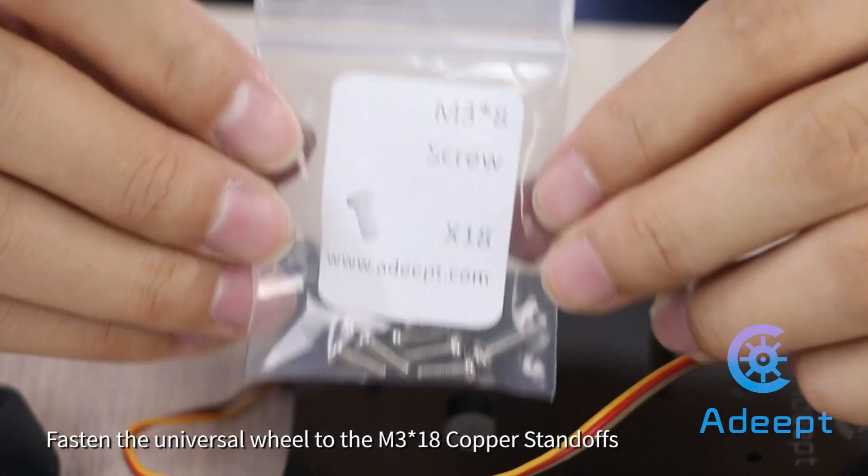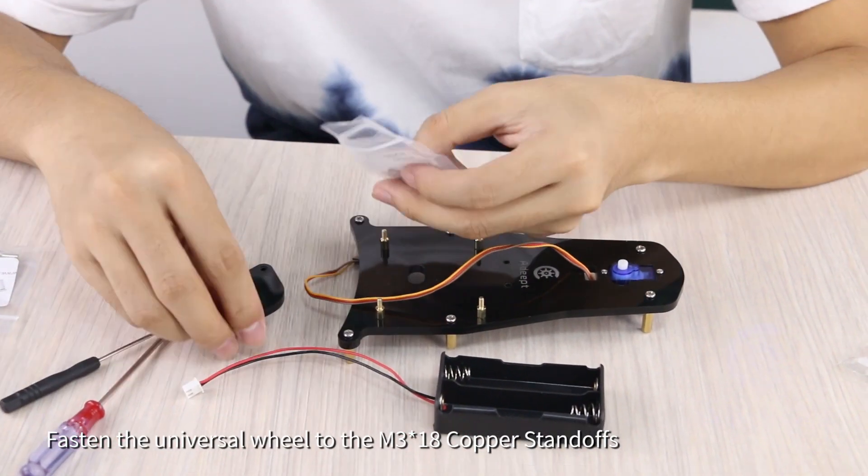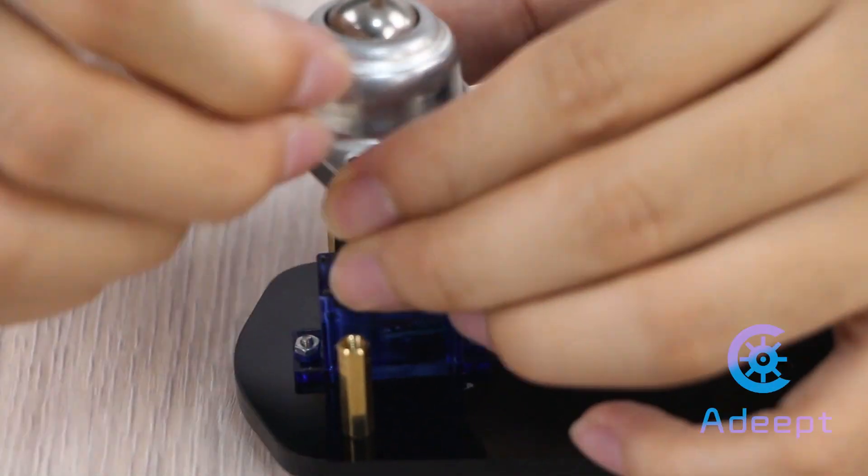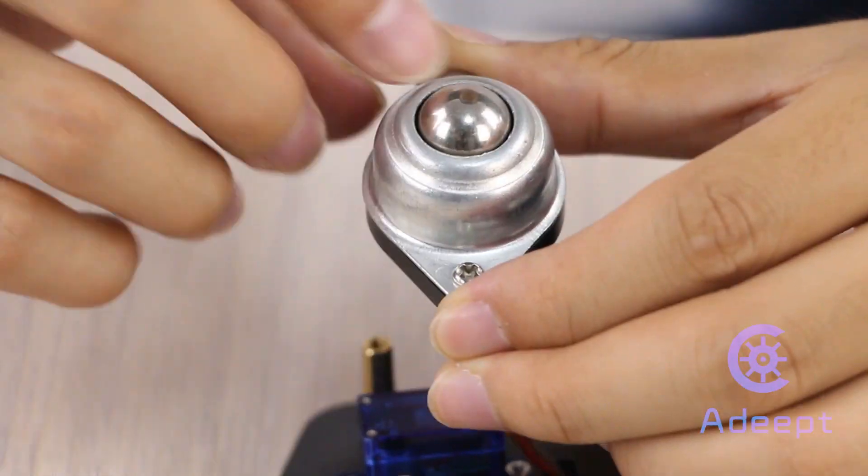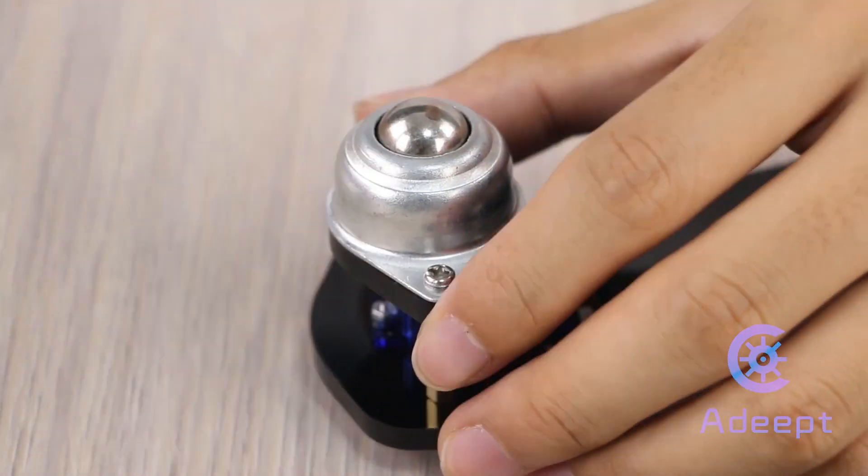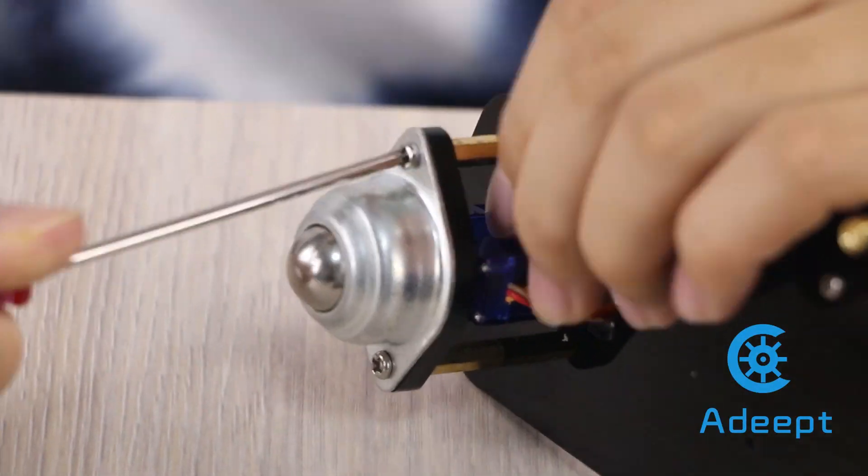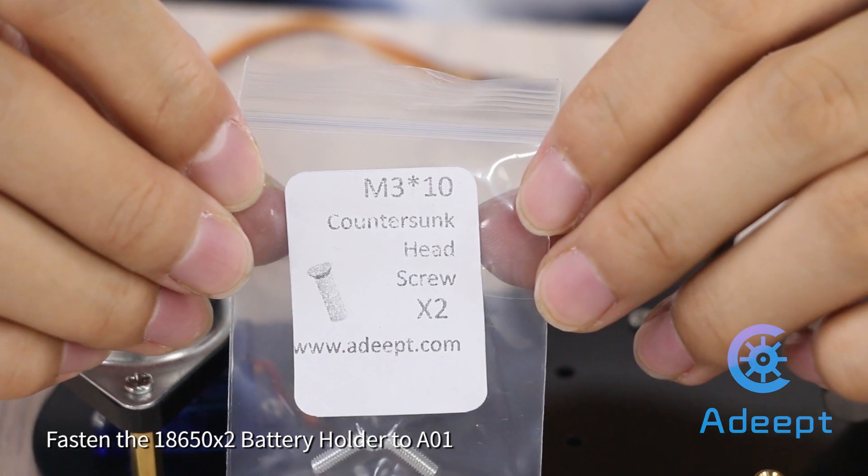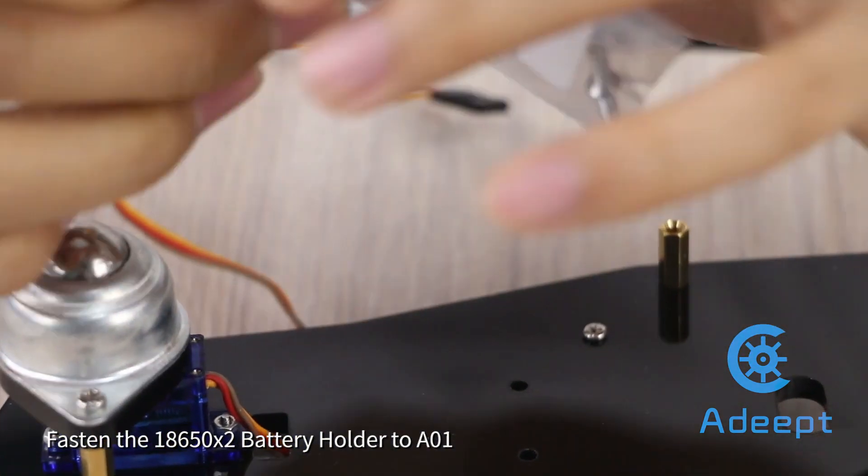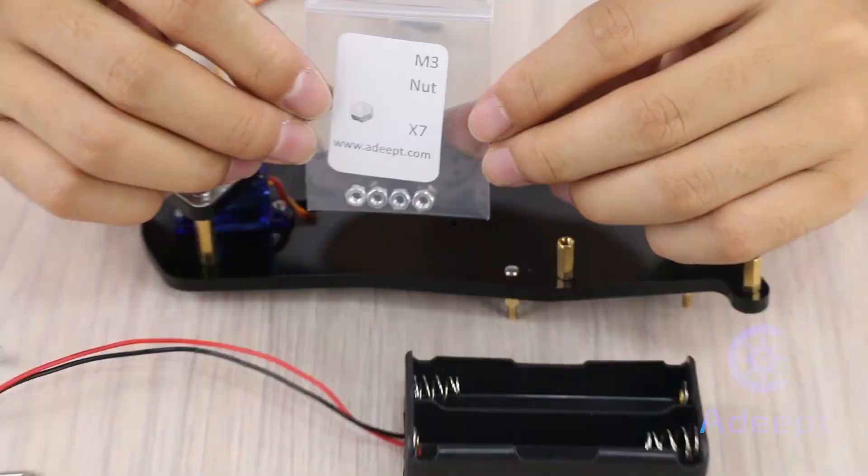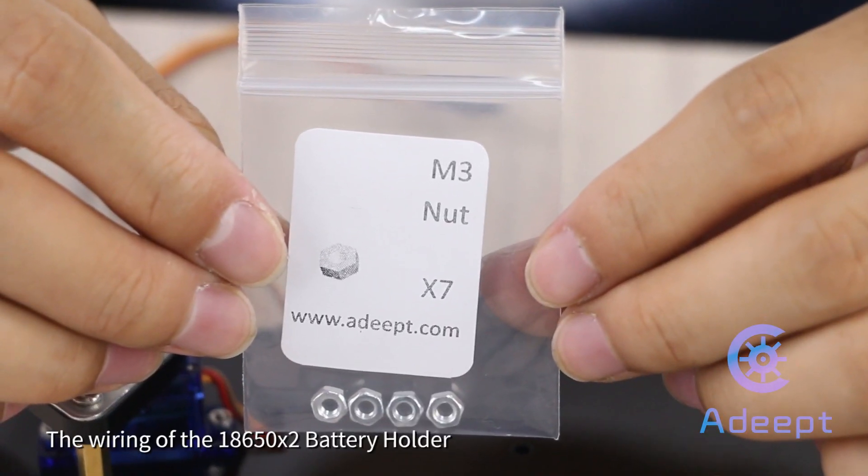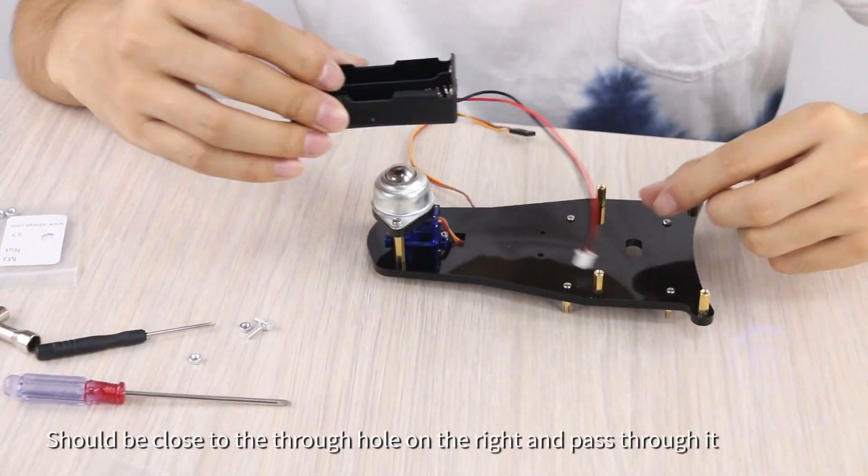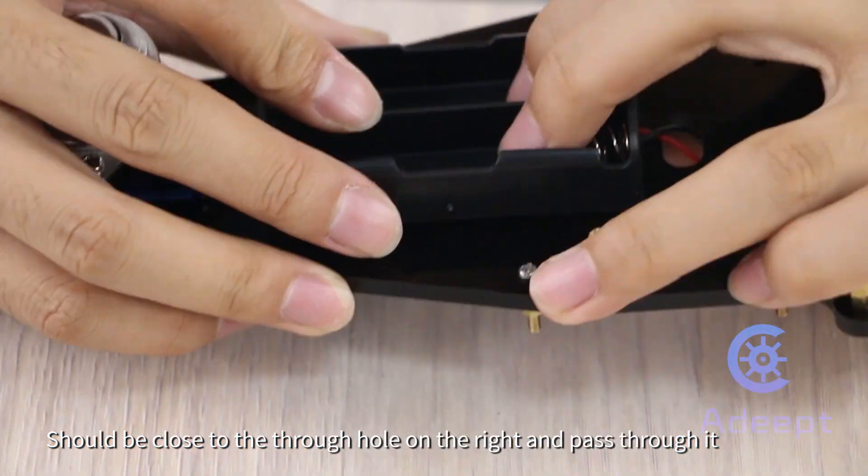Fasten the universal wheel to the M3 multiple 18 copper standoffs. Fasten the 18650 multiple 2 battery holder to A01. The wiring of the battery holder should be close to the through hole on the right and pass through it.